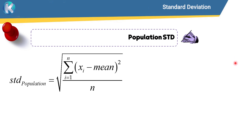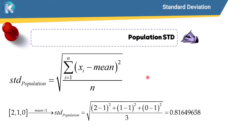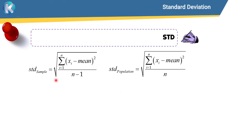Now let's talk about the population standard deviation. The only difference is in the denominator — it is not n minus 1, it is n. This is the only difference between the sample and population standard deviation. Here is an example, and the result is different from the sample standard deviation.